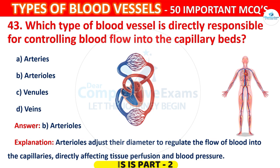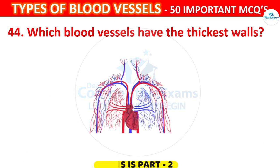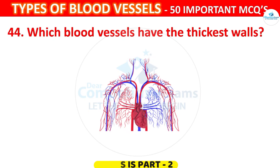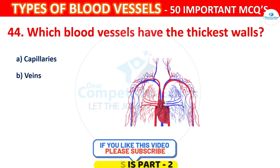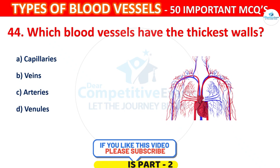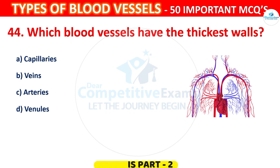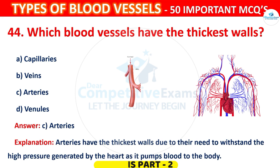Question 44. Which blood vessels have the thickest walls? Options: Capillaries, Veins, Arteries, or Venules. The correct answer is C, Arteries. Arteries have the thickest walls due to their need to withstand the high pressure generated by the heart as it pumps blood to the body.